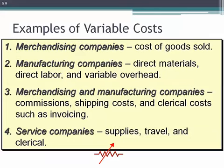Some examples: for merchandising companies such as Walmart, the variable cost is the cost of goods sold. For manufacturing companies, the variable costs are typically direct materials, direct labor, and a variable portion of overhead. Merchandising and manufacturing companies will also have variable costs consistent with sales commissions, shipping costs, and other clerical costs such as invoicing. Service companies might have variable costs in the area of travel, supplies, and clerical support.